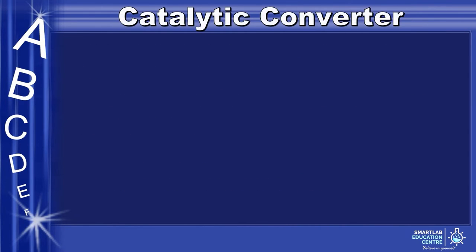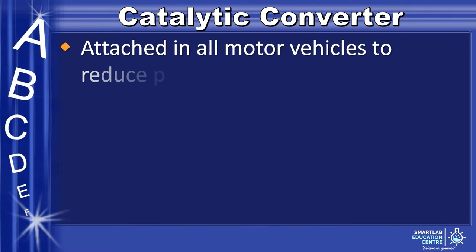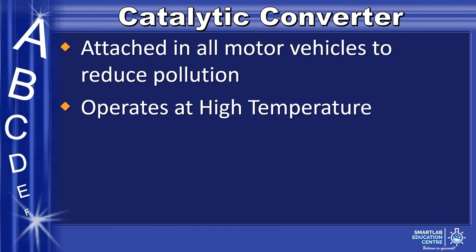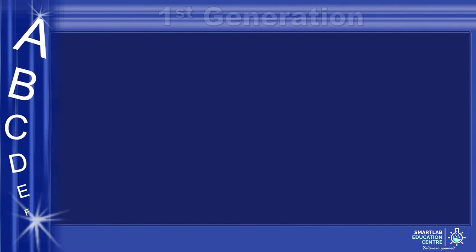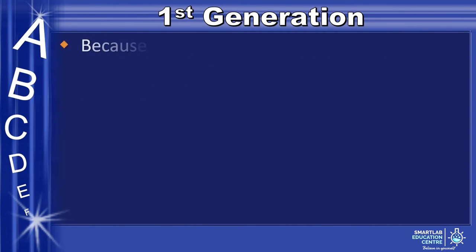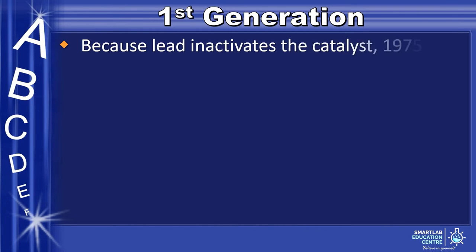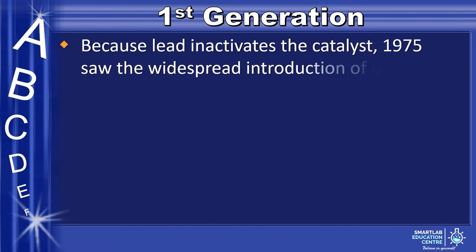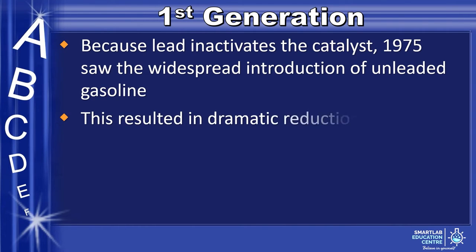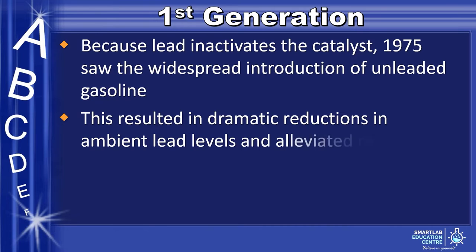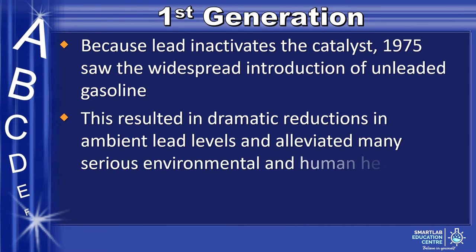A catalytic converter is attached in all motor vehicles to reduce pollution and it operates at a high temperature. For the first generation of catalysts, due to lead inactivating catalysts, in 1975 we saw the widespread introduction of unleaded gasoline. This resulted in dramatic reductions in ambient lead levels and alleviated many serious environmental and human health concerns associated with lead pollution.